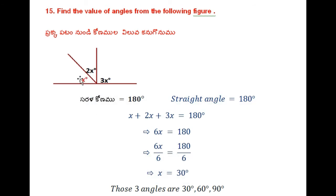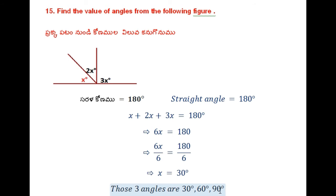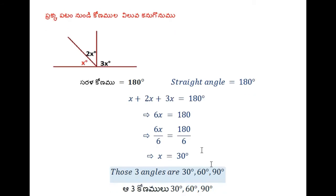So the first angle is 30 degrees. Second angle is 2 times 30 equals 60 degrees. Third angle is 3 times 30 equals 90 degrees. Those angles are 30 degrees, 60 degrees, and 90 degrees.